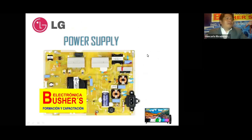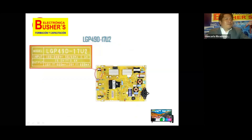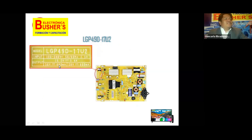Vamos a tomar como ejemplo esta fuente LG de un televisor 4K. LG en todas sus fuentes nos da indicaciones de los parámetros en los que opera el producto. Aquí hay una etiqueta serigrafiada que nos indica el modelo de la fuente y características de las tensiones de salida. Una de las características principales es la tensión máxima y la corriente máxima que aplica a los LED: 56 voltios 660 miliamperios y 28 voltios 660 miliamperios. Esto es referencial; en el caso de este modelo no se cumple totalmente.